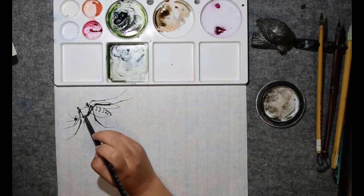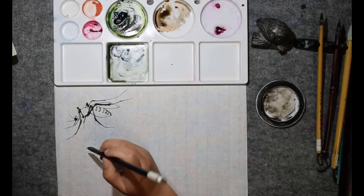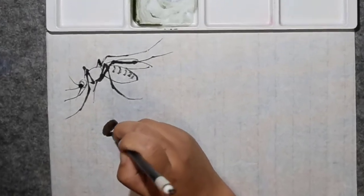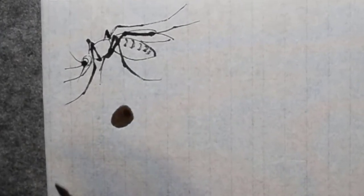Let's paint the thorax first because the thorax is in the center. Okay, two strokes. Thorax, okay.